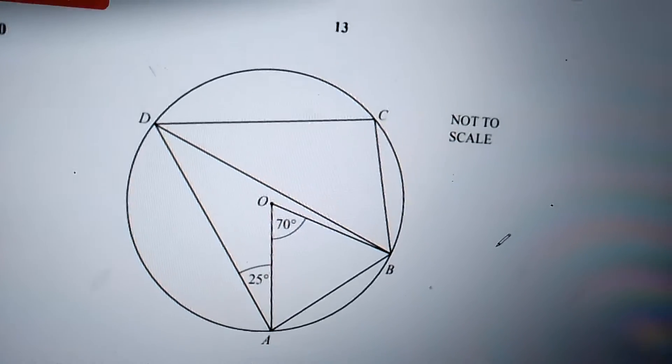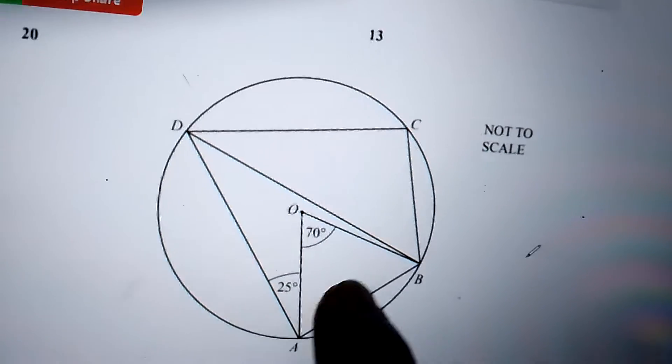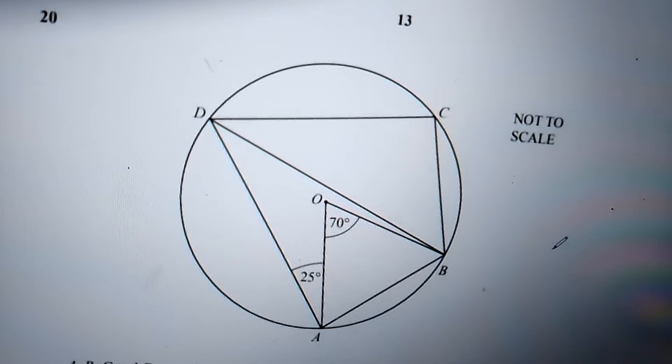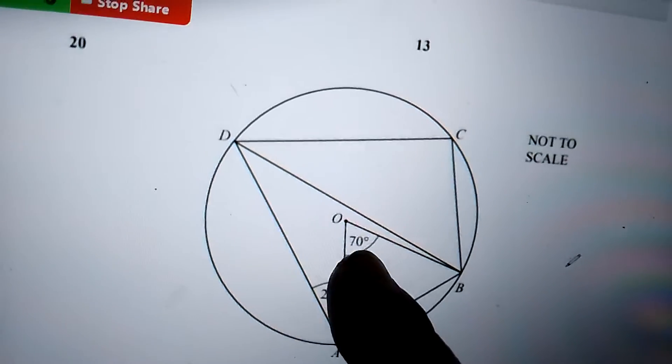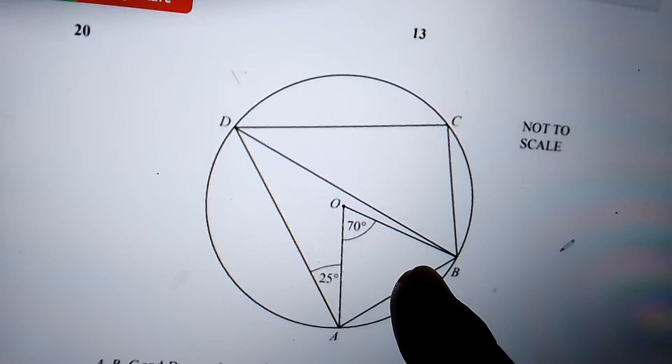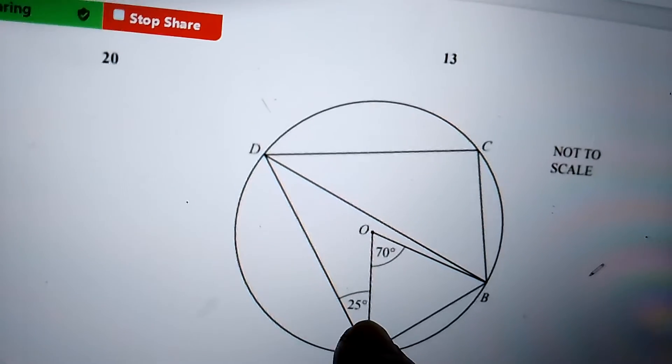If I see that this is the angle over here, this is OAB which is an isosceles triangle. If this angle is 70, these two angles will be equal. 180 minus 70 is 110, so the angle will be divided into 55 and 55. So OAB, this angle will be 55.